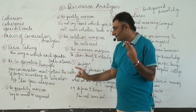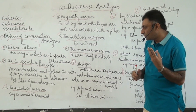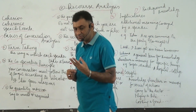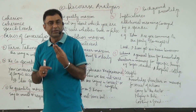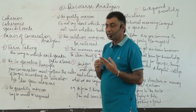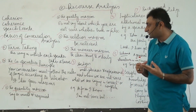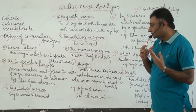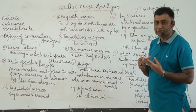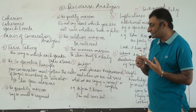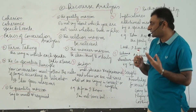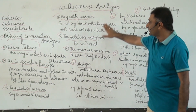The first maxim is the quantity maxim. Quantity maxim means say as much as required. Whenever you are talking to any person, if you say more than what is needed you are going to distort the situation. Say what is necessary — this is called the quantity maxim and it is a part of the cooperative principle.